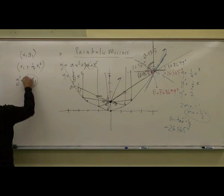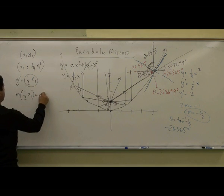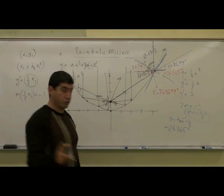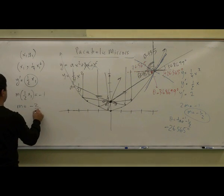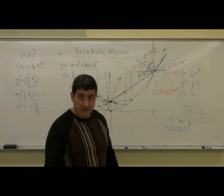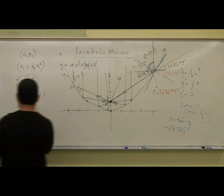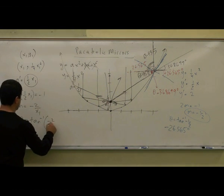So what slope times half x1 equals negative 1? The product of the two lines. So you have M equals negative 2 over x1. Then we took the tangent inverse of that. Theta equals tan inverse of negative 2 over x1.